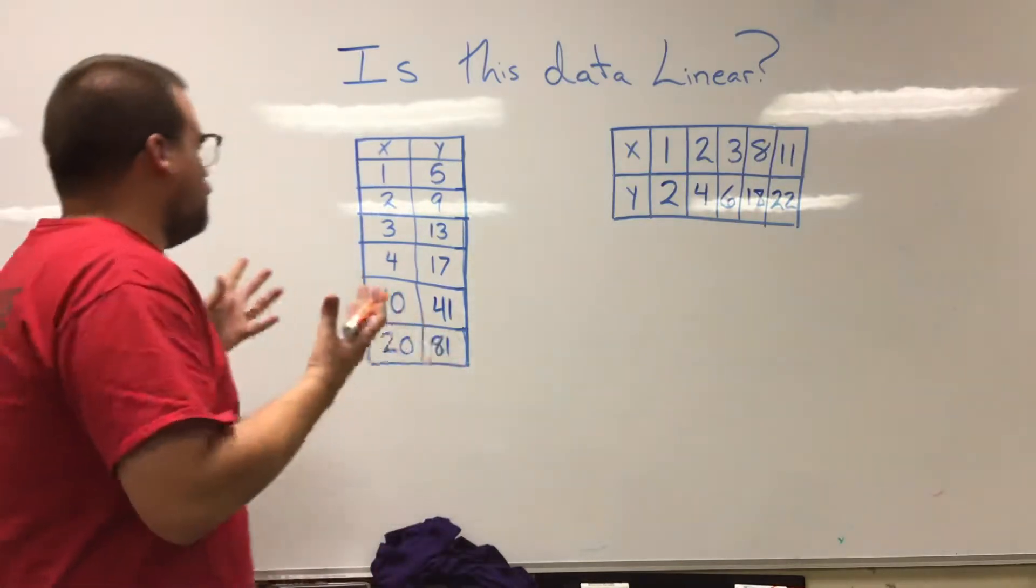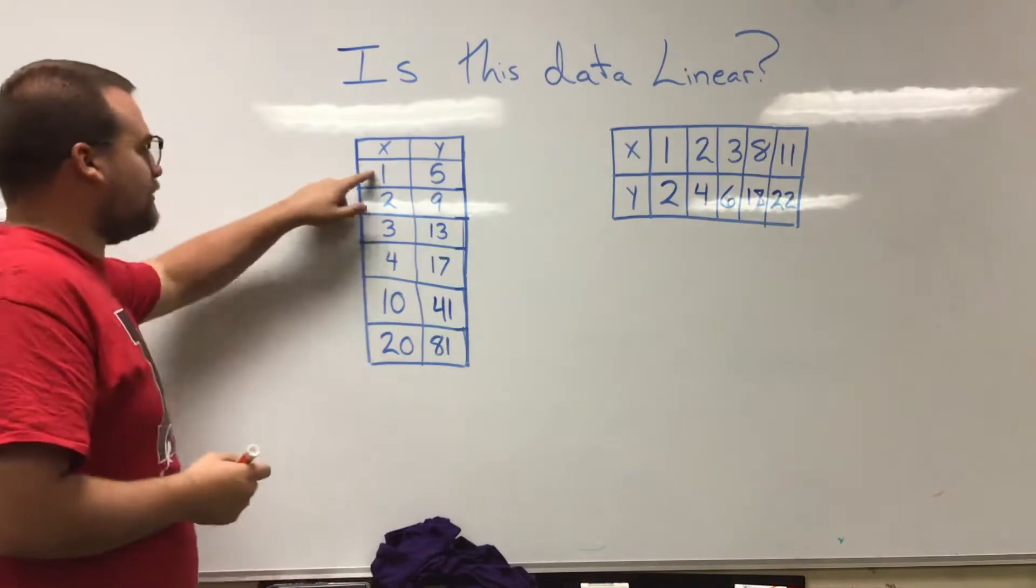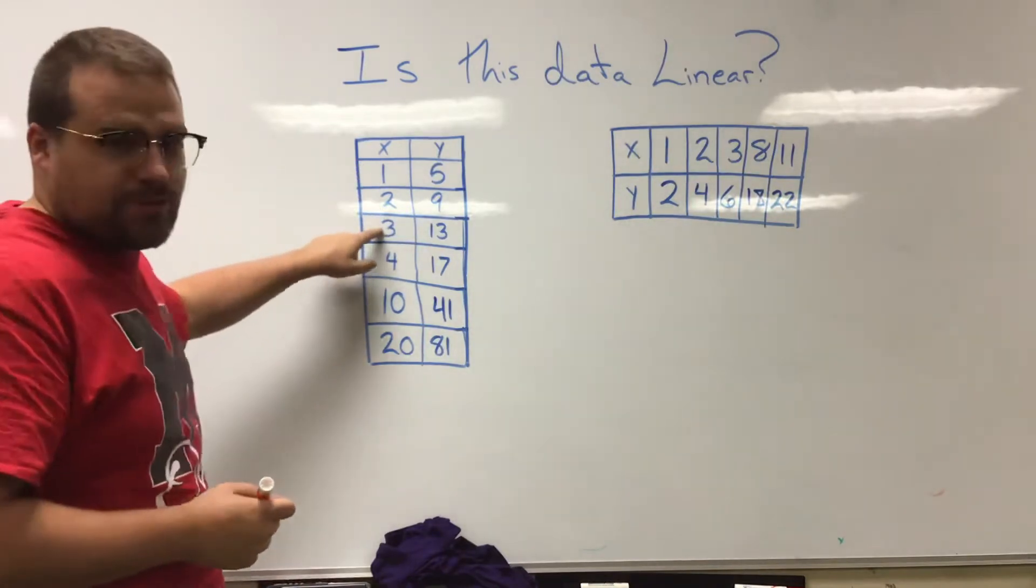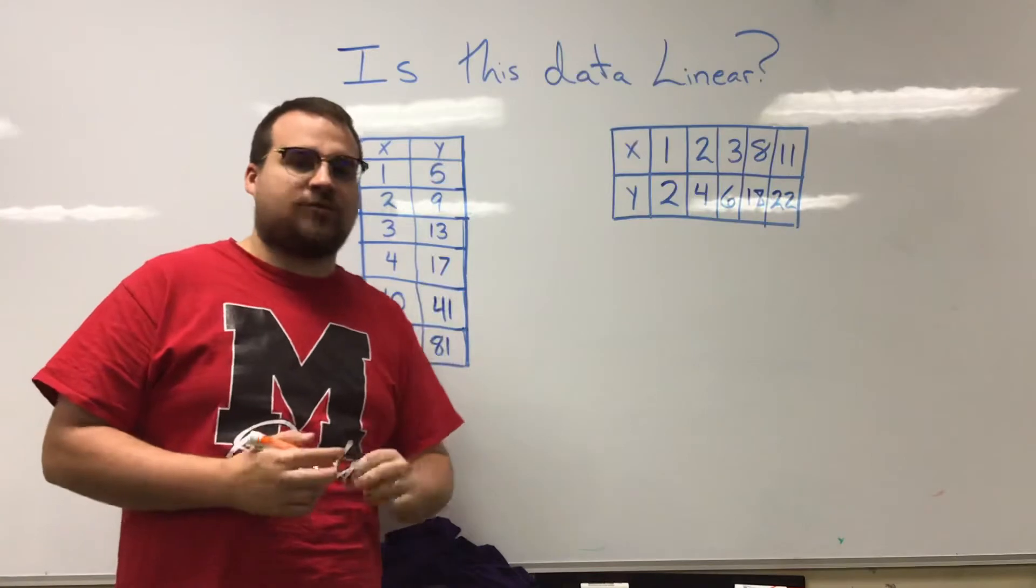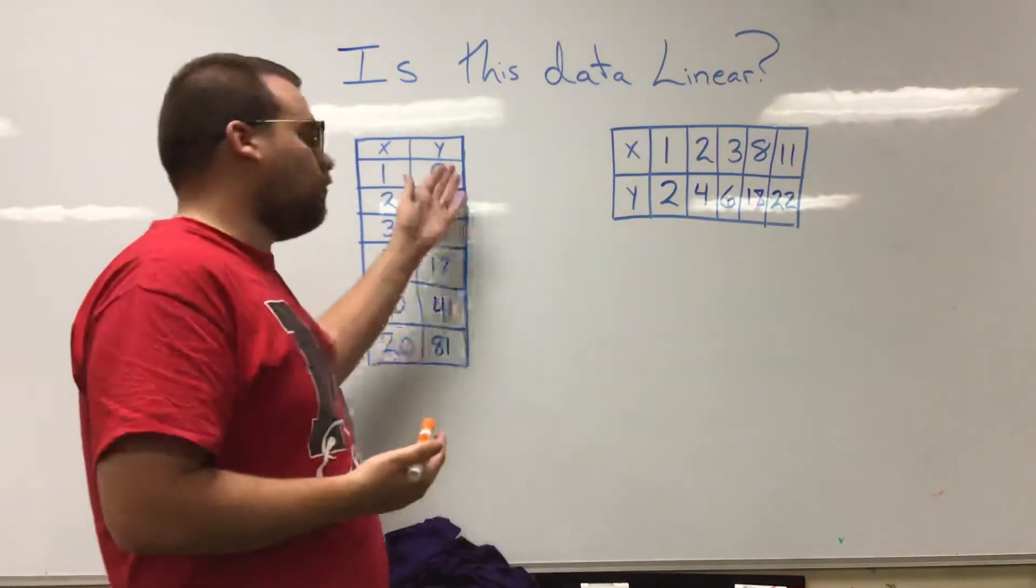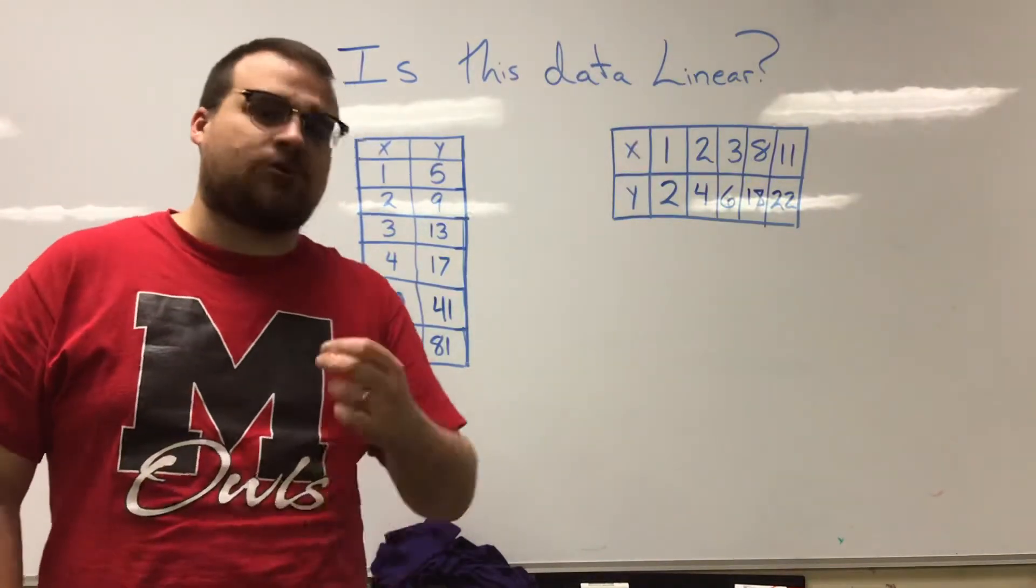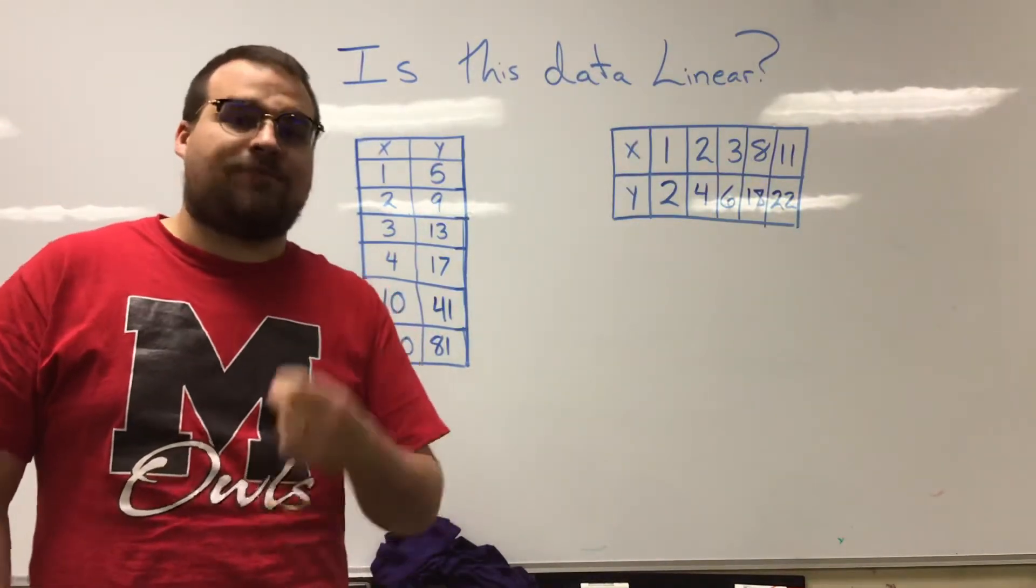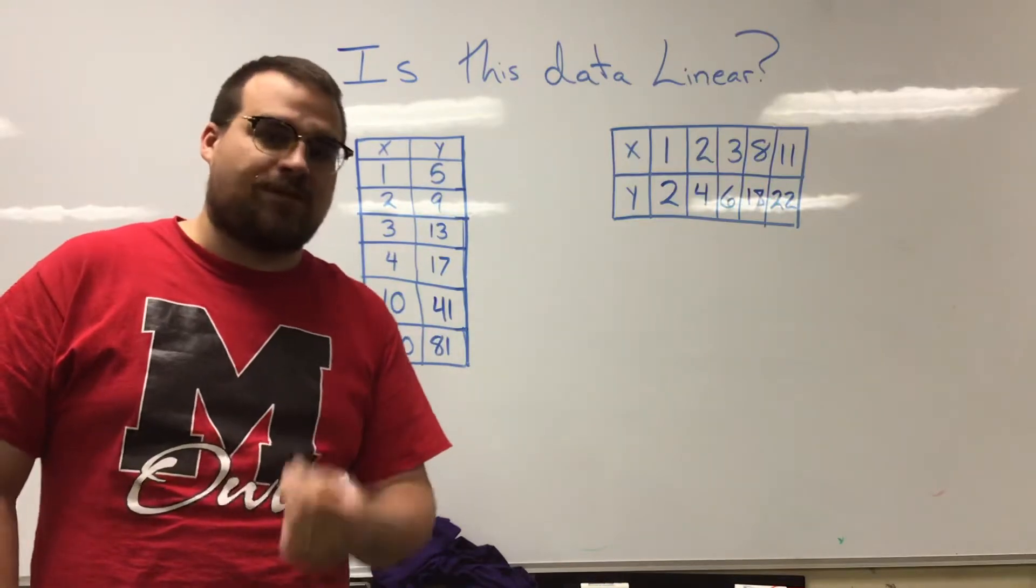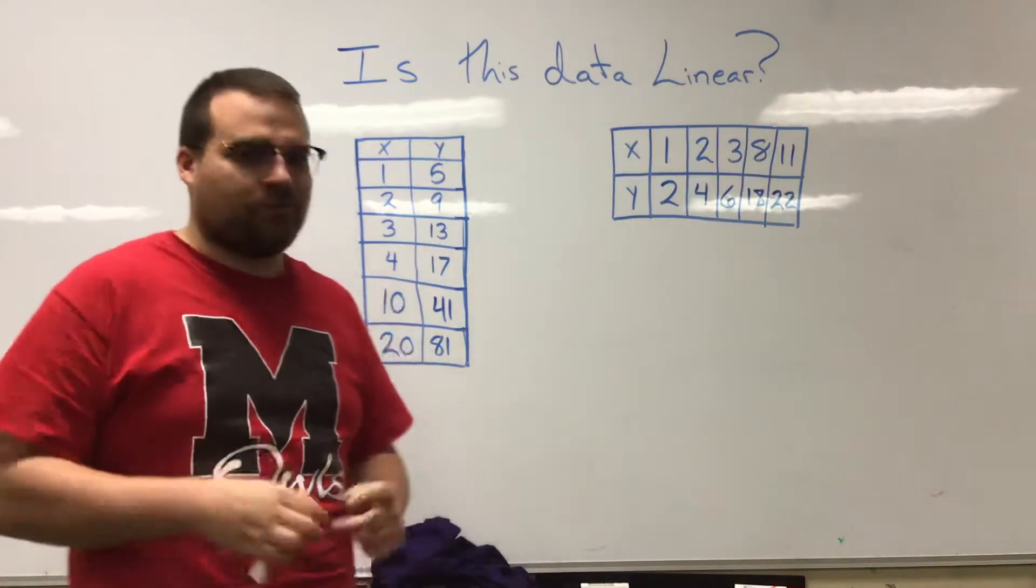So a linear data set says that as the X value increases, there should be a constant rate of change or a constant increase or decrease in Y values. So what we want to do is try to identify if there is a constant rate of change in Y or if that change kind of fluctuates a little bit.